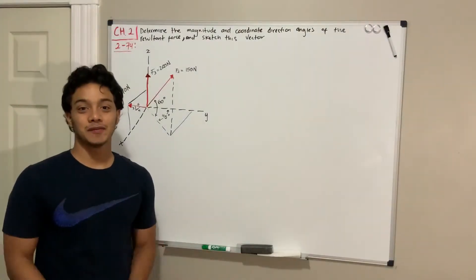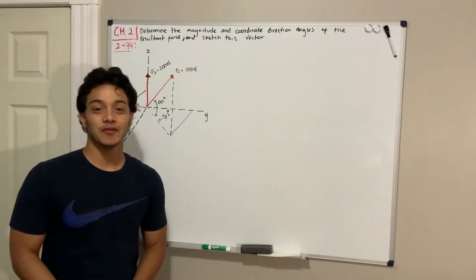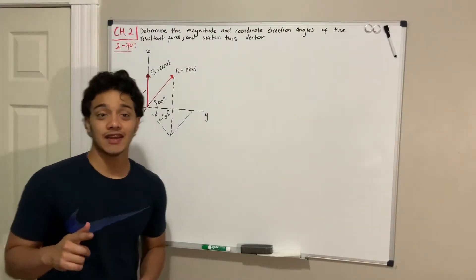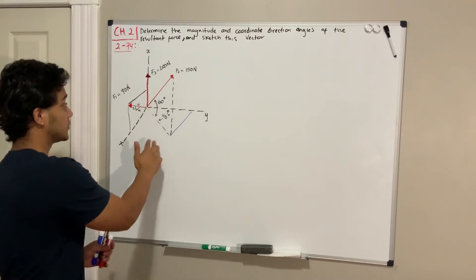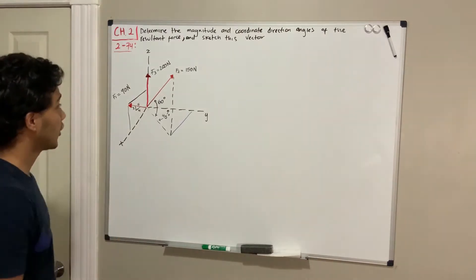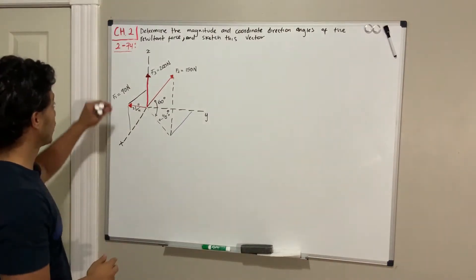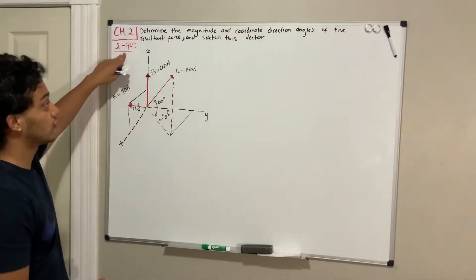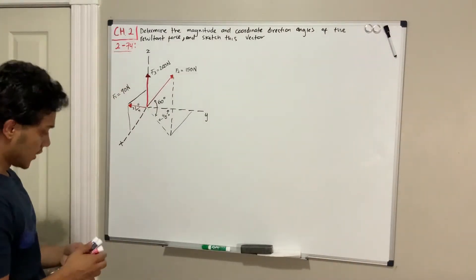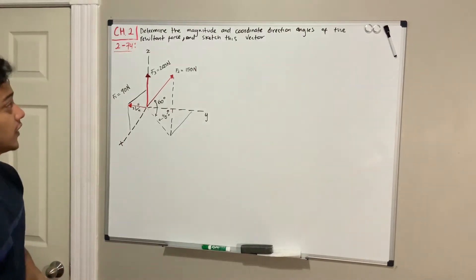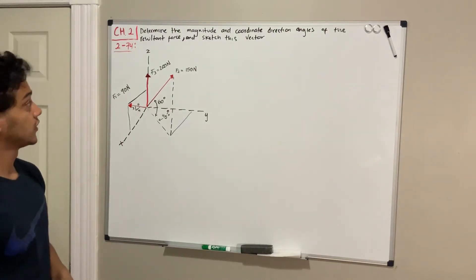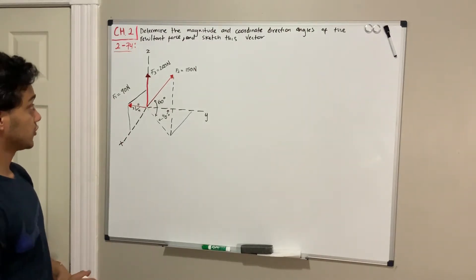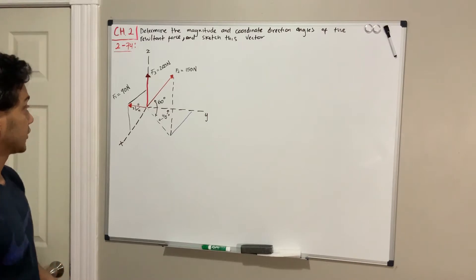Welcome back everyone to Learn Invitation. We're doing statics and continuing with 3D problems. We're going to do problem 274. It says determine the magnitude and coordinate direction angles of the resultant force and sketch this vector.